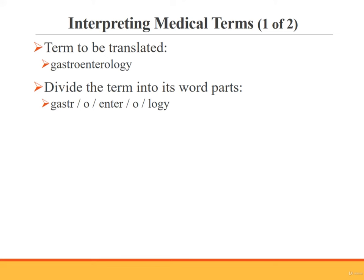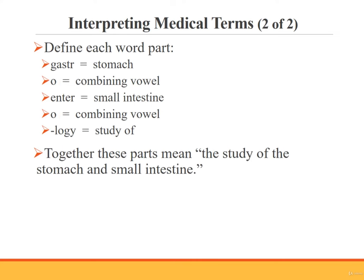Once you understand word building, you'll be able to both build and interpret medical terms. For example, let's look at the medical term gastroenterology. The first thing you need to do to interpret this term is divide it into its word parts. Now that you have divided gastroenterology into its word parts, let's define them: gastro means stomach, O is a combining vowel, enter means small intestine, O again is a combining vowel, and logi means study of. When you combine the meanings of the word parts to create a definition, you begin with the suffix and then move to the beginning of the term. In this case, you get: the study of the stomach and the small intestine.